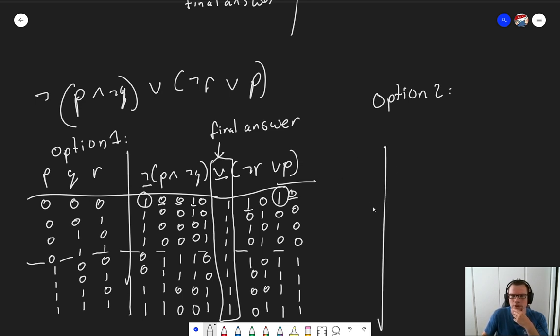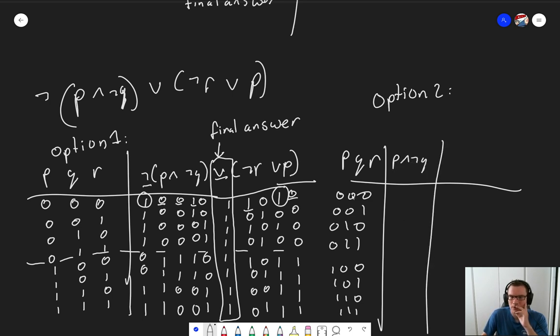And option 2. In option 2, what we do is we start off the same. P, Q and R. But now we split it up. So the first thing we do is we take, for example, P and not Q. P and not Q. OK. 0 0 0 0. And we say, well, we call this A. What we actually need is the negation of A. So not A is 1 1 1 1 0 0 1 1.